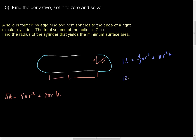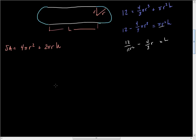So now I've got 12 minus (4/3)πr³ is equal to πr²h. If we divide both sides by πr², that gives us 12/(πr²) minus (4/3)r is equal to h. Now we can substitute that in for h and proceed. So our surface area is equal to 4πr² plus 2πr times [12/(πr²) minus (4/3)r].